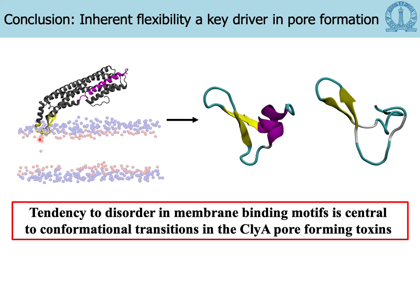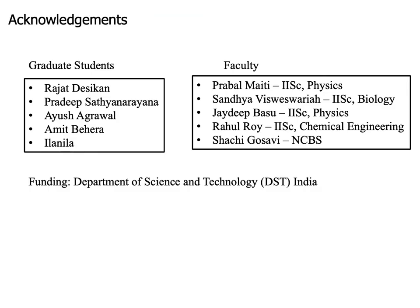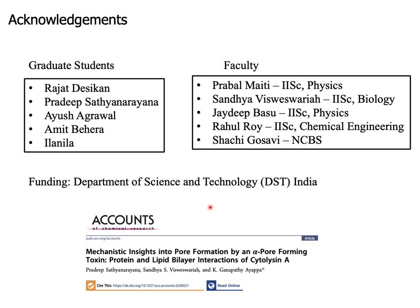All the simulations shown earlier were carried out for the monomer in solvent. In a simulation with the full monomer in the presence of a membrane, we find that the beta tongue actually loses secondary structure very rapidly. There is a tendency to disorder in the membrane-binding motifs that seems to be central to conformational transitions in ClyA pore-forming toxins. I would like to acknowledge the graduate students involved, my faculty collaborators, and funding from the Department of Science and Technology. We have recently published this work in Accounts of Chemical Research, compiling work done in this area over the last decade, specifically with reference to CytolysinA. Thank you for your attention.